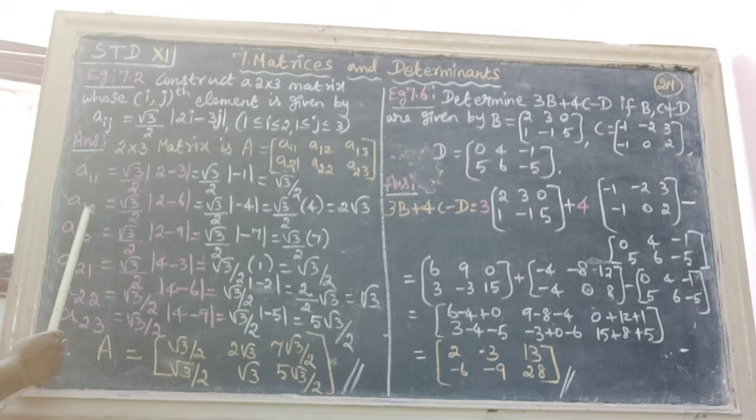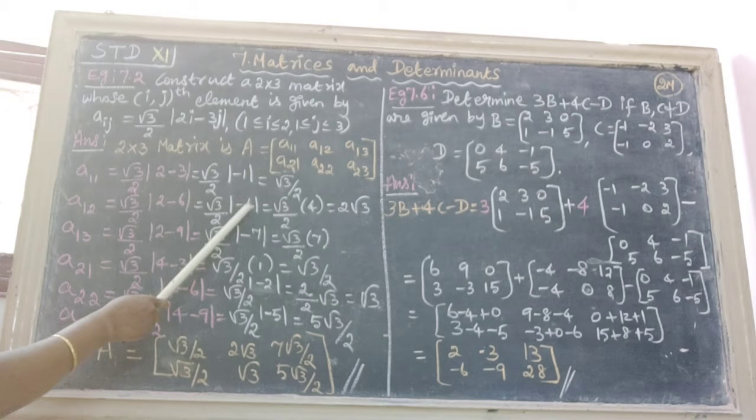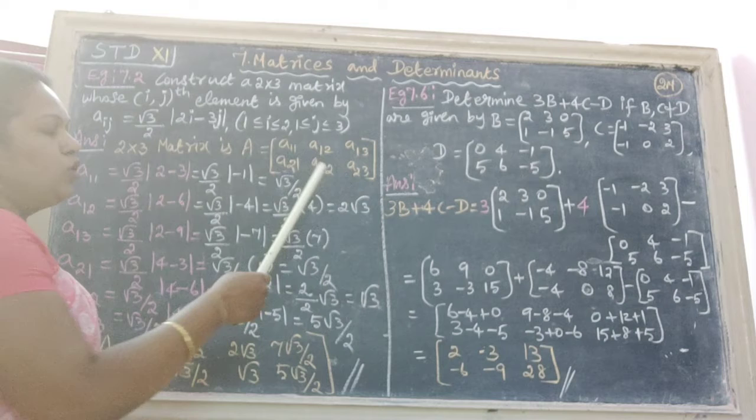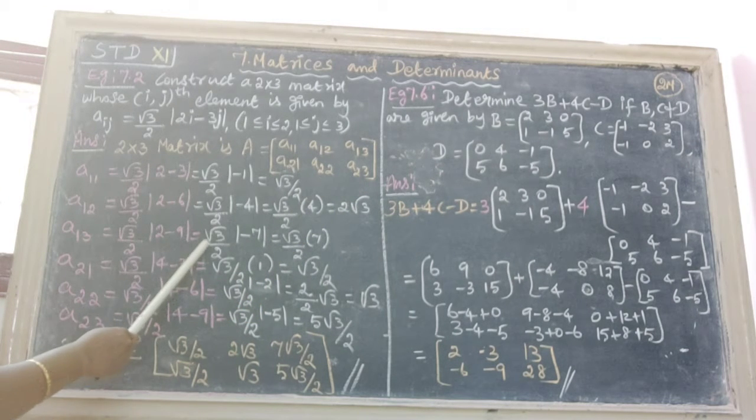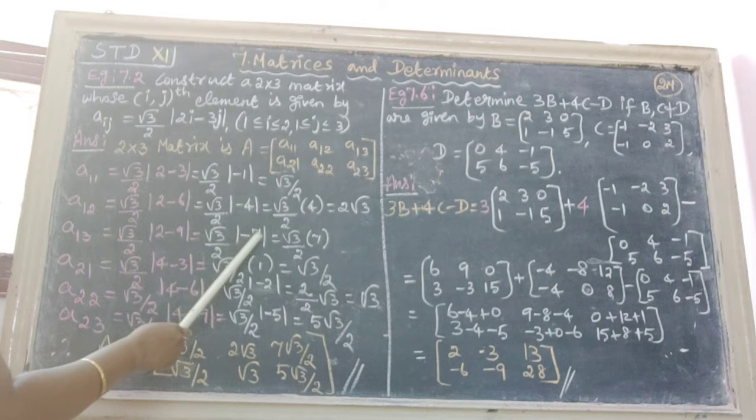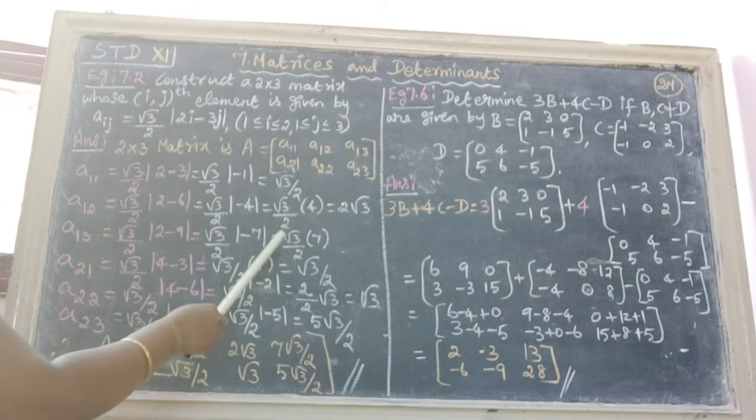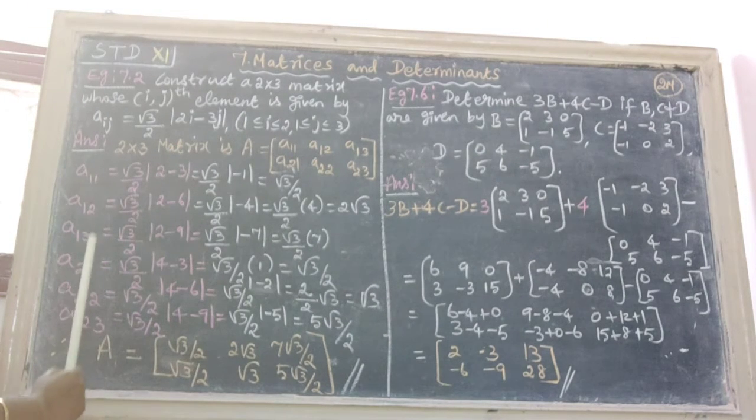Next to find A12, put i equal to 1, j equal to 2. Therefore we get here modulus minus 4, we take plus 4. Cancelling 2 and 4 we get 2 root 3. Next one is A13, we get root 3 by 2 modulus minus 7, put plus 7, therefore the answer is 7 root 3 by 2.